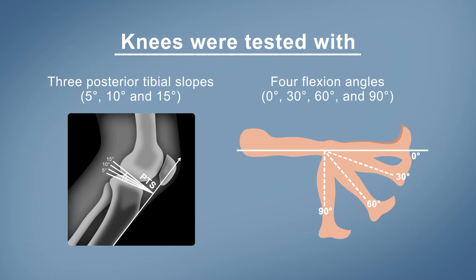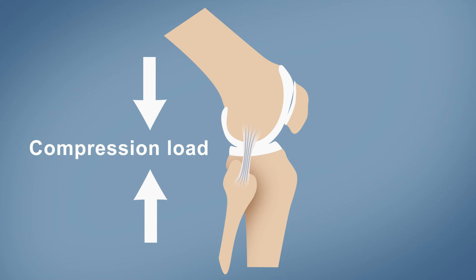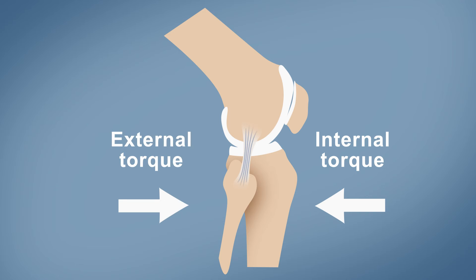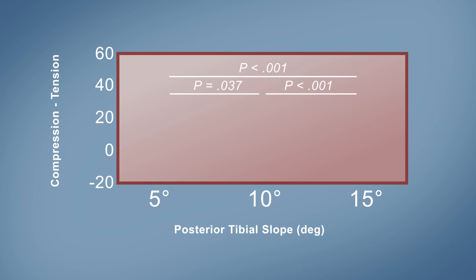These knees were tested with different posterior tibial slopes and oriented at different flexion angles. The forces imparted on these knees included a compression load, internal torque, and external torque. Forces were measured using a novel multi-axial force sensor.